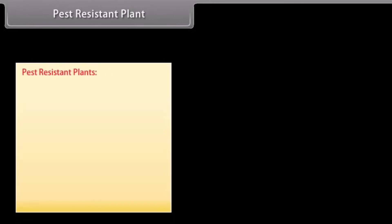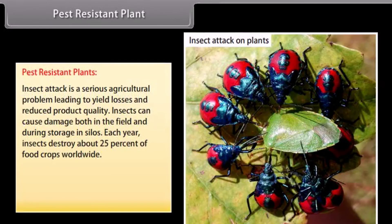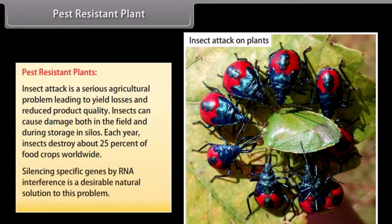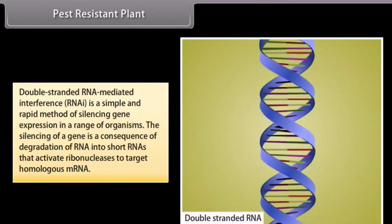Pest resistant plants: insect attack is a serious agricultural problem leading to yield losses and reduced product quality. Insects can cause damage both in the field and during storage in silos. Each year insects destroy about 25% of food crops worldwide. Silencing specific genes by RNA interference (RNAi) is a desirable natural solution. RNAi is a simple and rapid method of silencing gene expression. The silencing is a consequence of degradation of RNA into short RNAs that activate ribonucleases to target homologous mRNA.